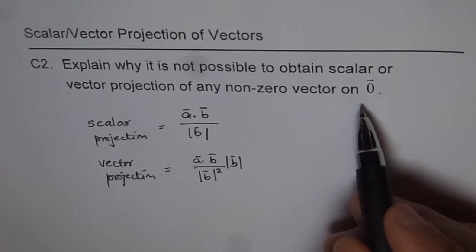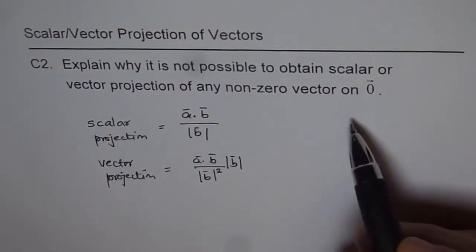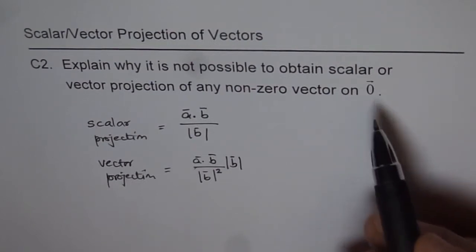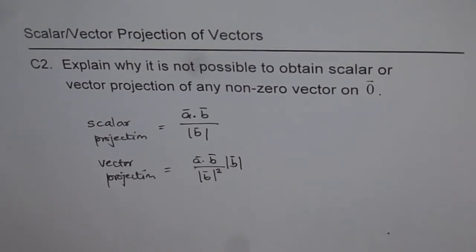And therefore, we can say or reason out that there is no possibility of having a scalar or vector projection of any non-zero vector on zero vector. That is one thing.